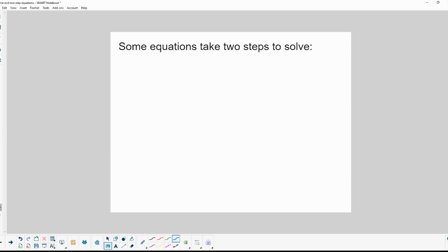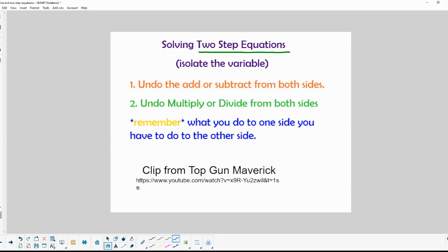Some equations take two steps to solve. In order to do that you undo the add or subtract from both sides first. Then you undo the multiply or divide from both sides. And remember what you need to do for one side you have to do to the other. And just for the fun of it you might want to click on this link about the movie Top Gun Maverick. They talk about two steps to accomplish their mission. And we have two steps to accomplish solving these two-step equations.